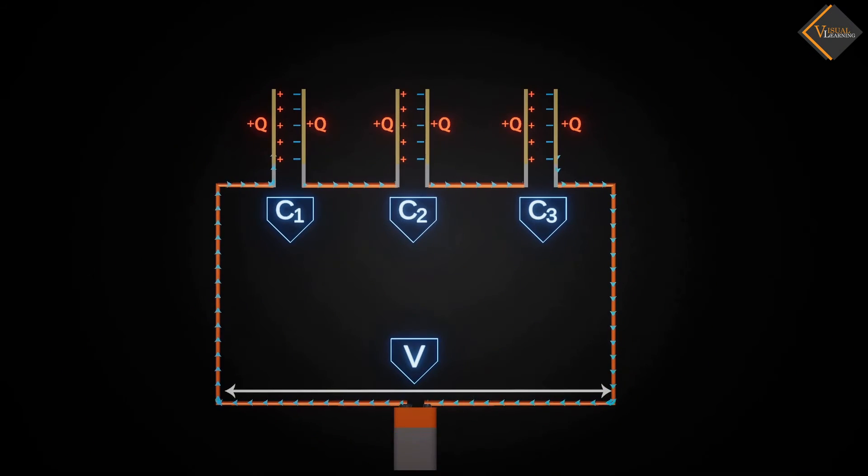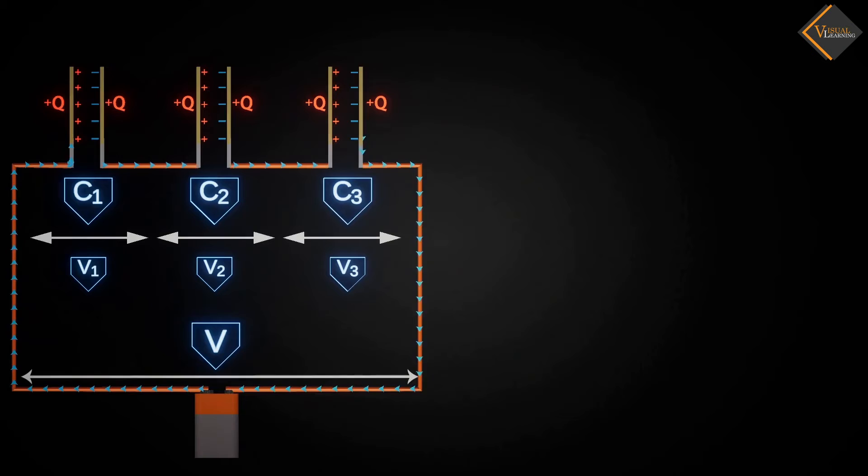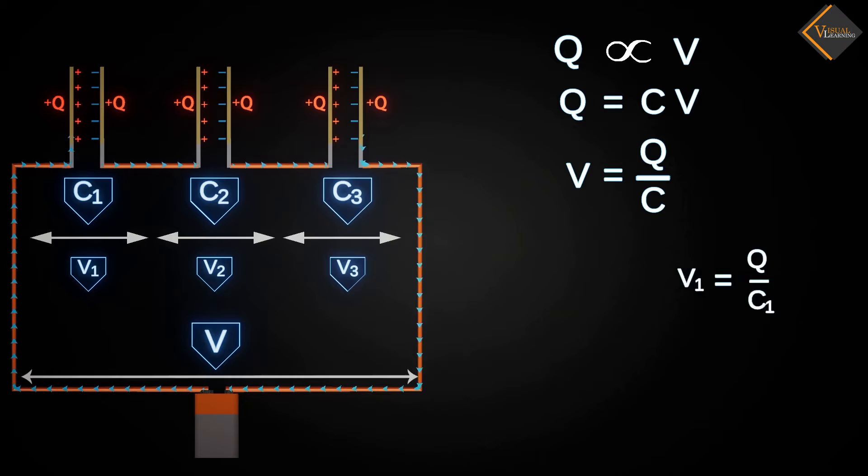Now, as potential is applied in this circuit, it gets divided according to the capacitance of each capacitor. When we apply potential to a capacitor, the charge stored in it is directly proportional to the potential. By simplifying this equation, we get a relation between capacitance and potential. By using this equation, we can calculate V1, V2 and V3, the potentials across each capacitor.